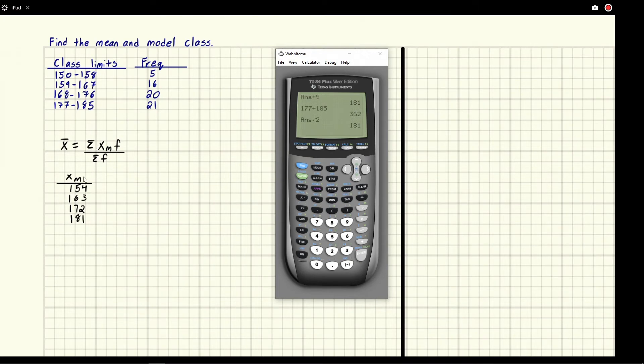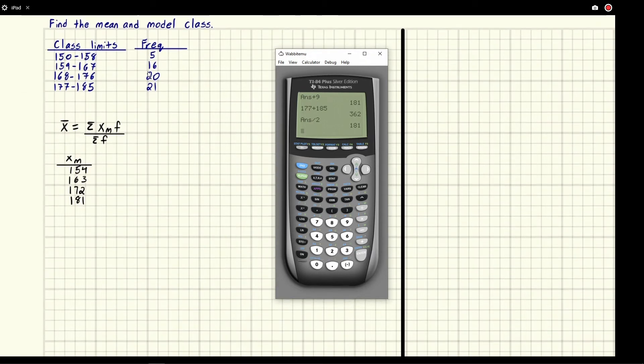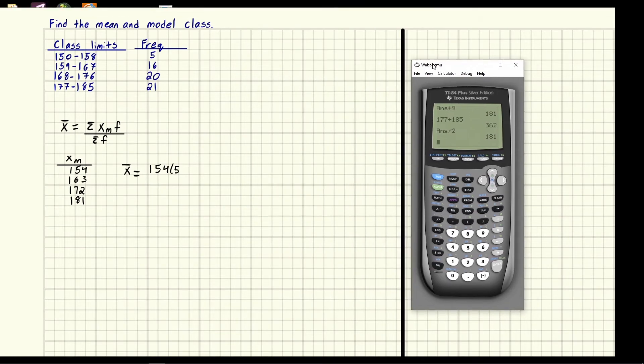So now we're going to use our formula. So we're saying take the midpoints multiply by the frequency do this for all the pairs so like 154 times five let's write it out. So if we were to write this formula out we're saying that the mean is equal to and then we're going to do this top piece first. So that's the midpoint so the first midpoint is 154. So we have 154 times the first frequency which is up here it's five. It's going to multiply by five.